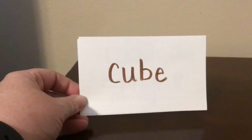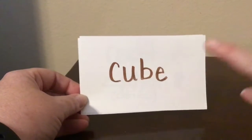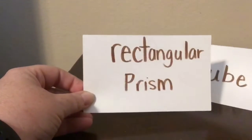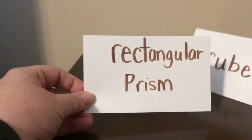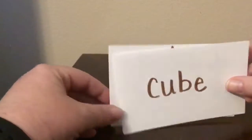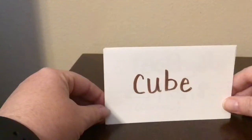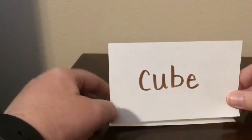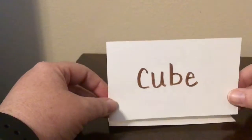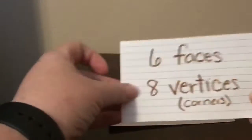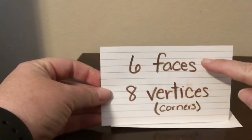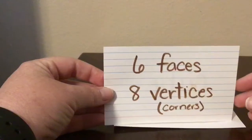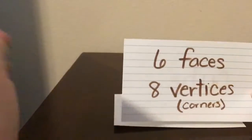All right, today in math we're going to talk about cubes and rectangular prisms. A cube is kind of like a square, except it's a 3D shape, and it has six faces or flat sides and eight vertices or corners.